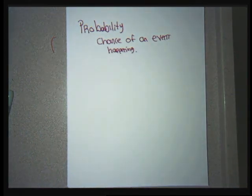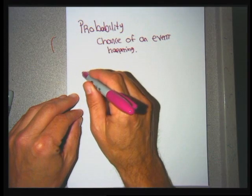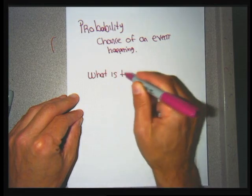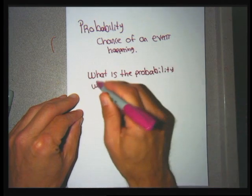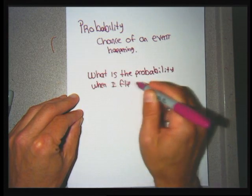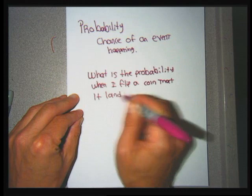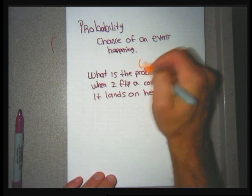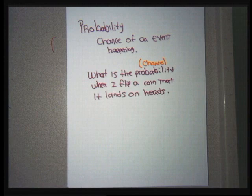An event could be rolling a dice. A typical probability-type scenario would be: what is the probability that when I flip a coin, it lands on heads? We can interchange the word 'probability' with 'chance' — that's how likely something is to happen. Probabilities can't be less than zero or bigger than one.